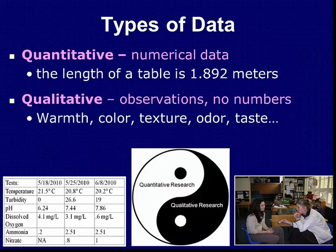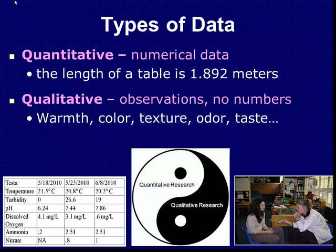We have one more topic: we'll be collecting data many times this year, and typically we'll be collecting one of two types. Quantitative data refers to numerical data — for example, measuring a table and finding its length is 1.892 meters. Qualitative data involves observations that typically don't have numbers attached to them, such as warmth, color, texture, odor, or taste. Qualitative and quantitative research are like the two sides of a coin that we need to consider in our studies.